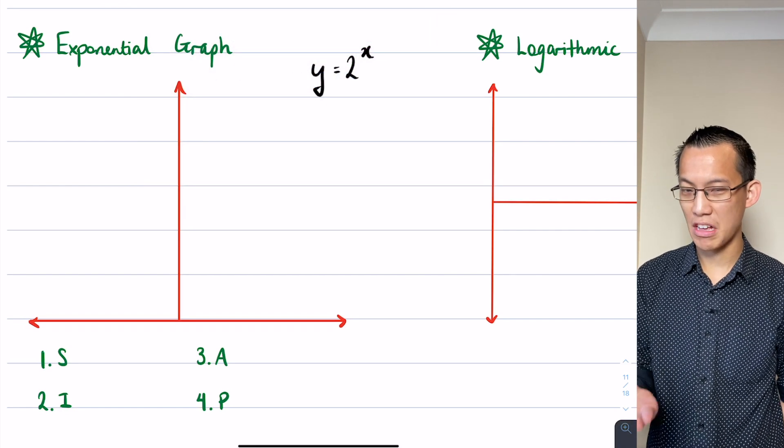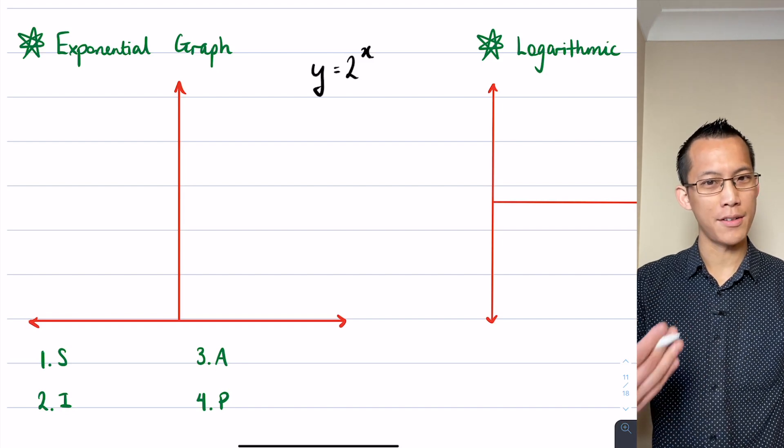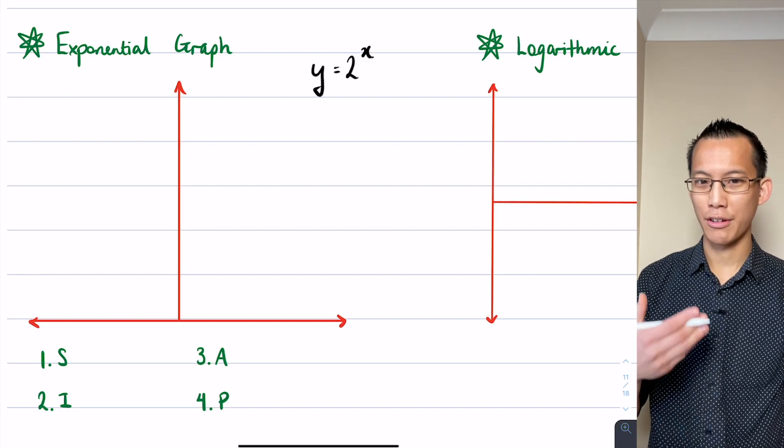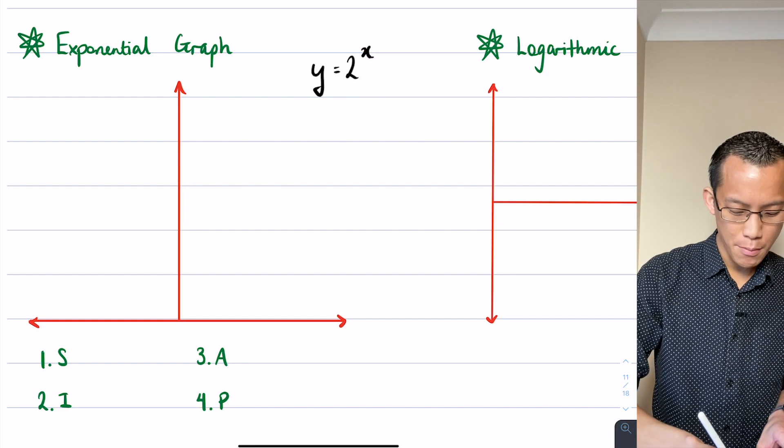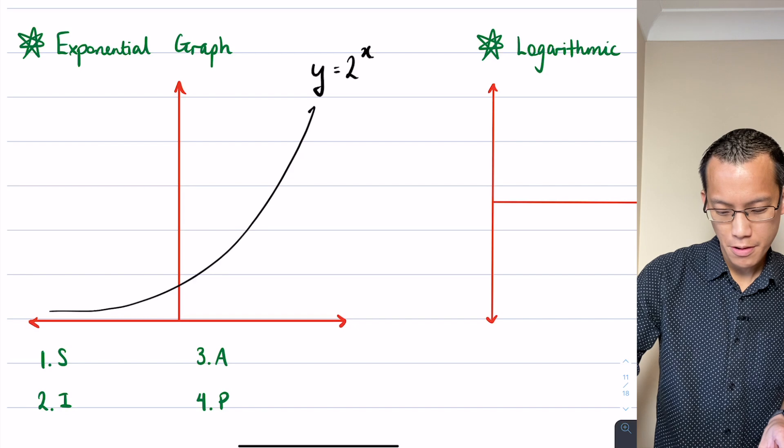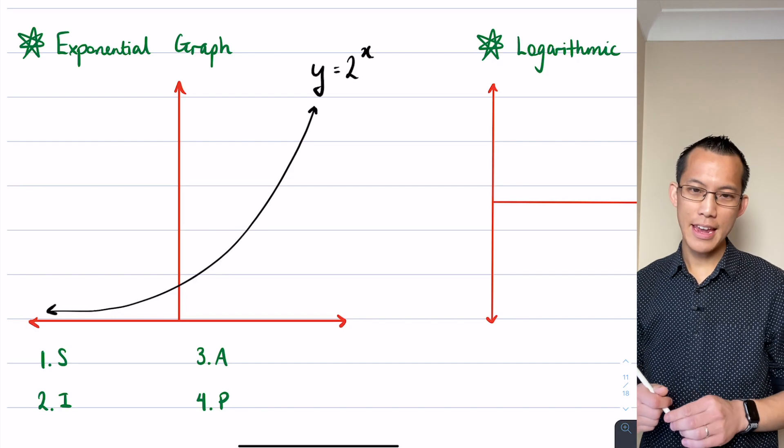You could just put in some values. What happens when x equals 0? I'll get 2 to the power of 0 which is 1. What happens when x equals 1? I'll get 2 to the power of 1 which is 2, and it skyrockets.